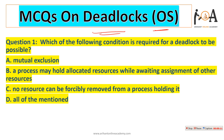Question number one is: which of the following conditions is required for a deadlock to be possible? For a deadlock to be possible, mutual exclusion should be there. There are some conditions required to make a deadlock possible, and the very first one is mutual exclusion — it is necessary.